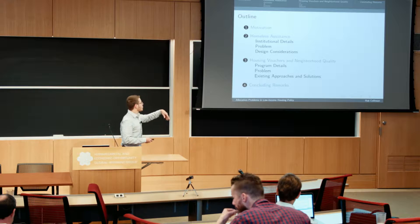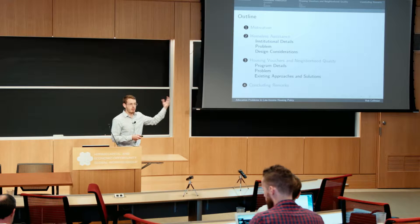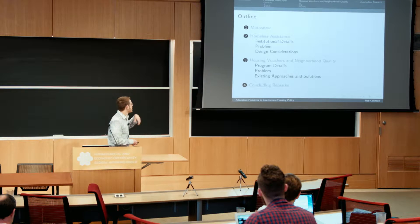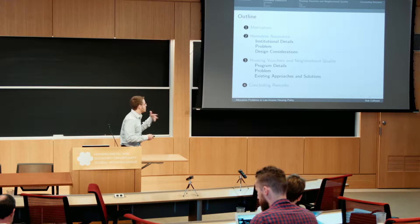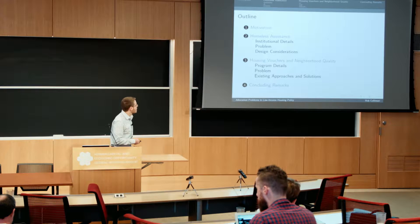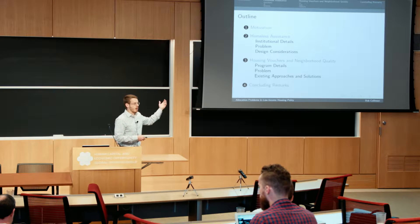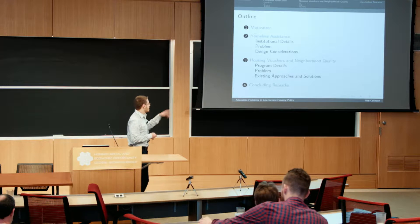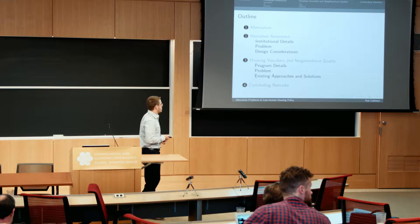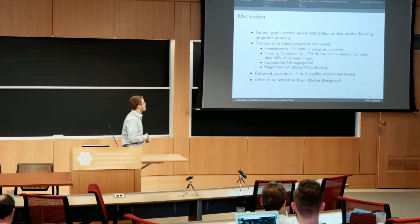Just a quick roadmap: I'll talk a little bit about why maybe we should care about low income housing policy. Then I'll jump into the two major areas I'll discuss — I'll spend a lot of time talking about the system of homeless assistance delivery, and then I'll talk about issues related to housing vouchers and neighborhood quality.